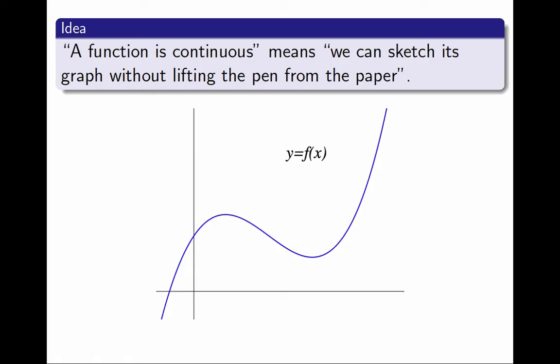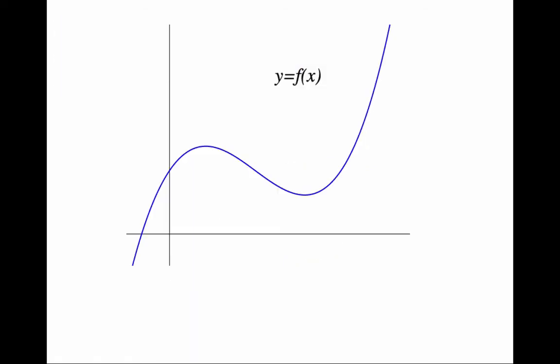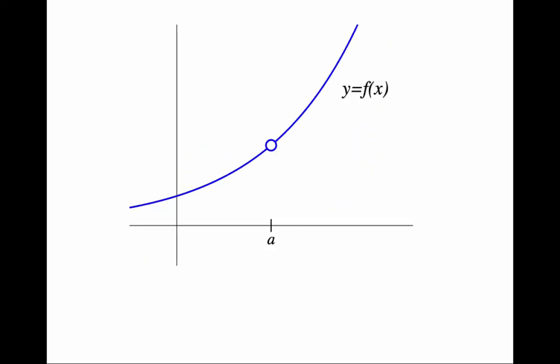I want to transform this vague idea into a rigorous definition. Let's examine some examples of graphs that cannot be drawn in one go, and see why. This graph, for example, cannot be sketched without lifting pen from paper, because it has a hole.